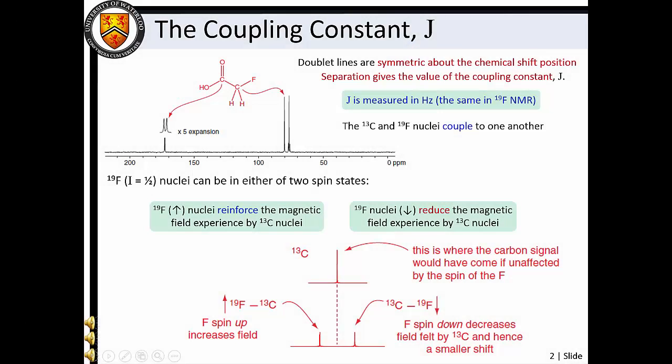The exact frequency at which a nucleus resonates depends on its magnetic environment. We saw in Masterclass 13 that the cycling of electron density influenced the effective magnetic field experienced by a given nucleus. This led to the concept of shielding and deshielding, or chemical shift.